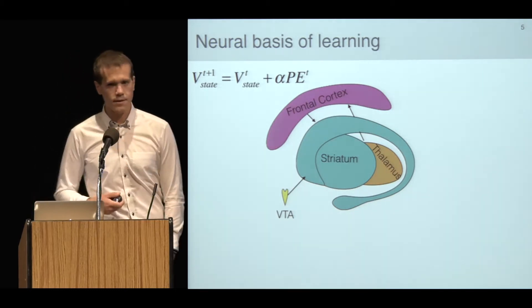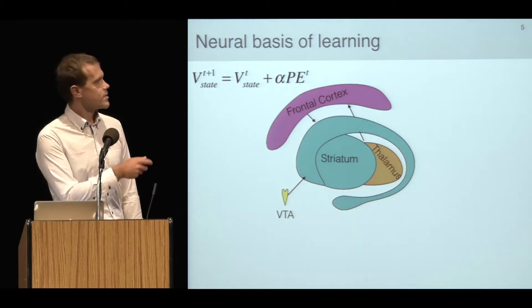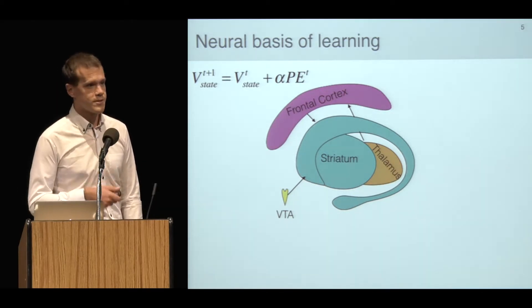It's this circuit that's thought to implement a reinforcement learning algorithm. Sitting on top of it is the frontal cortex which might provide information about rules or goals or actions available to the organism.